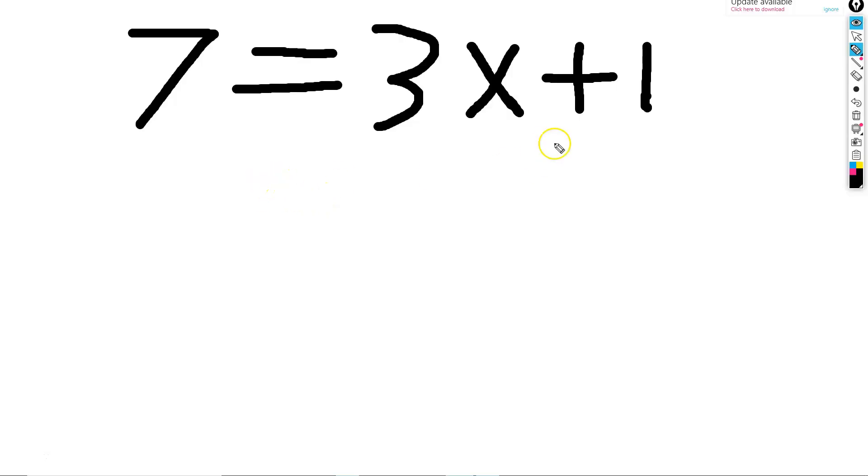The first thing we did was subtract 1 from both sides of our equation. We need to do it to both sides so that they stay equal to each other. We were left with 6 equals 3x.